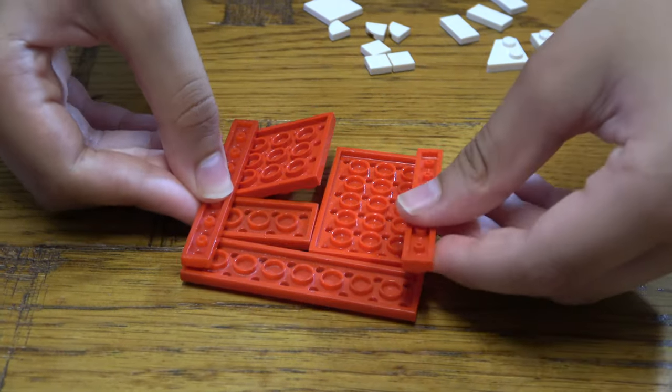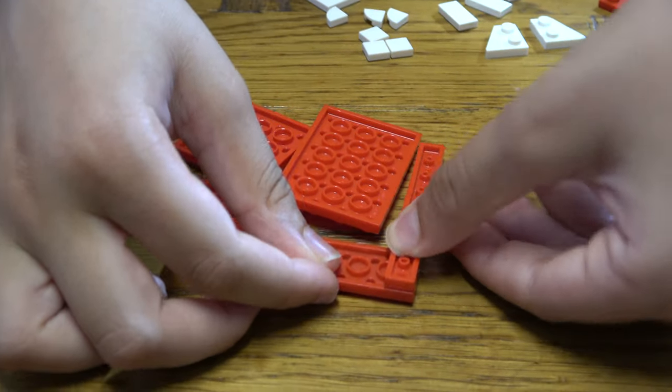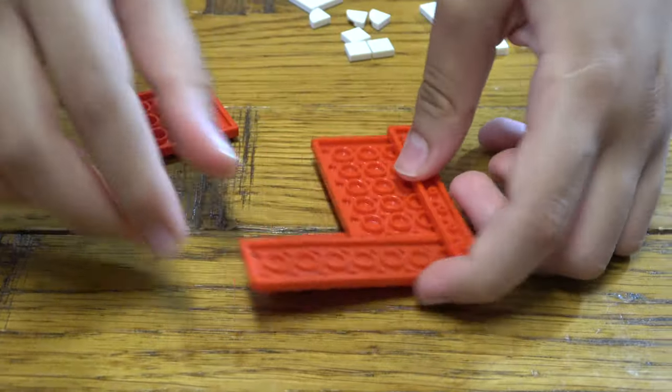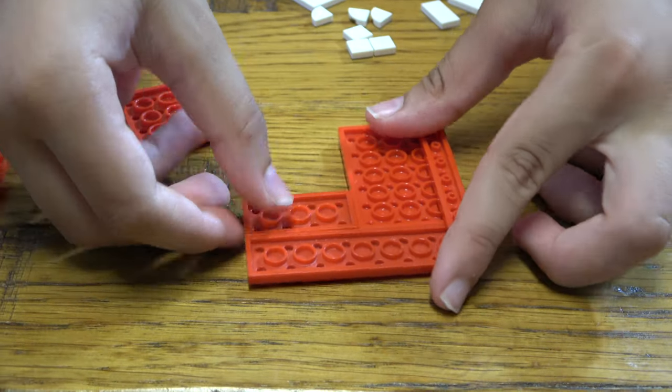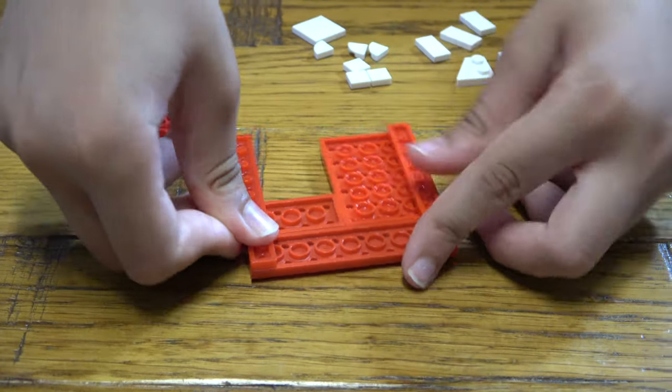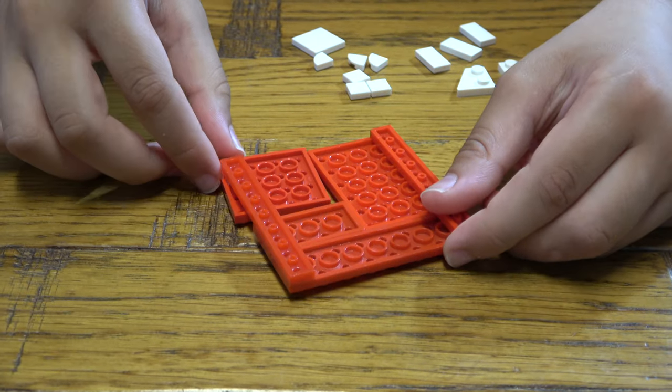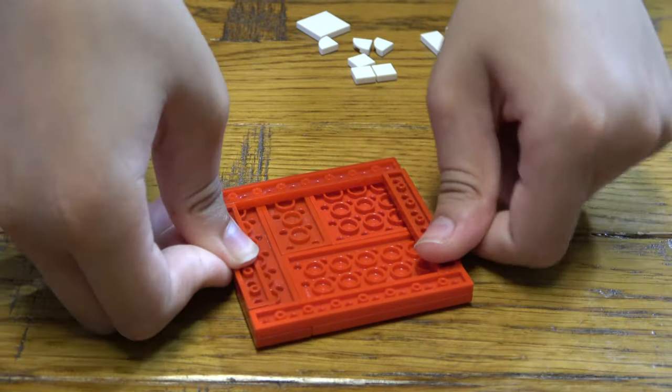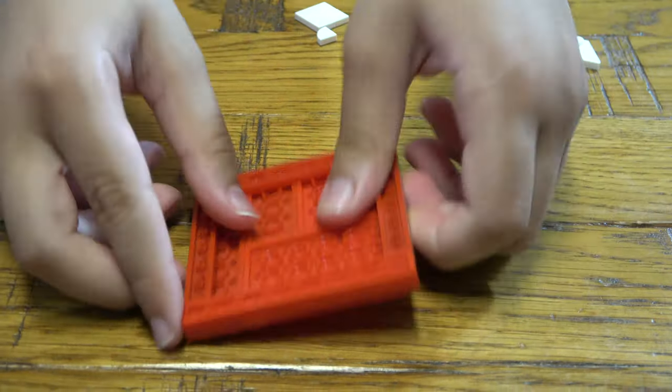I'm gonna place this here and we're gonna place this here, then two of these 1x6s here. So this is going to be like the back of it, and the front is gonna be easy.